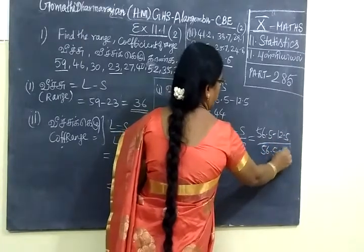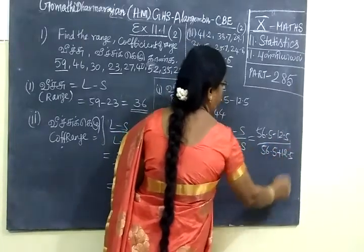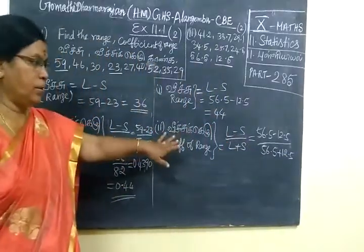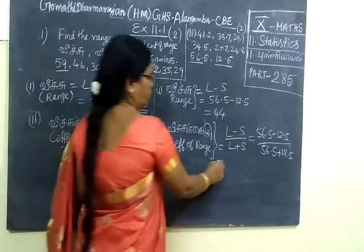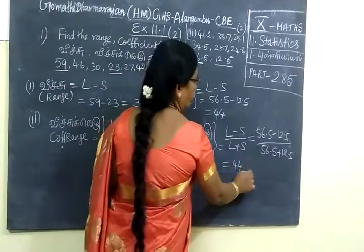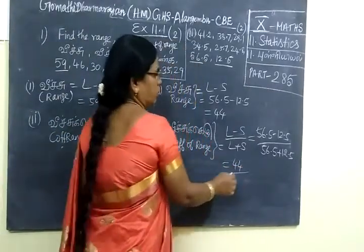In the numerator, we have the difference. In the denominator, we add. So we get 44 over, then 5 plus 1 is 6, so 69.